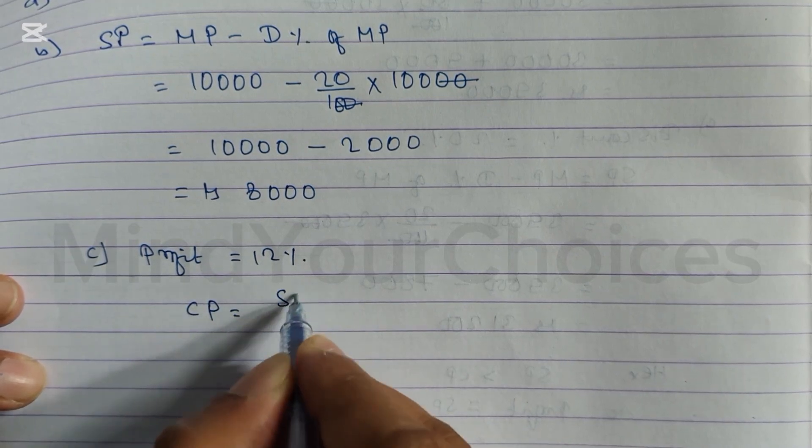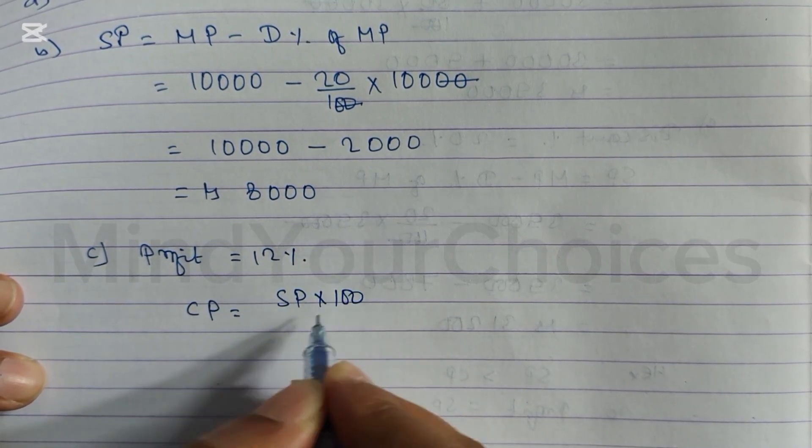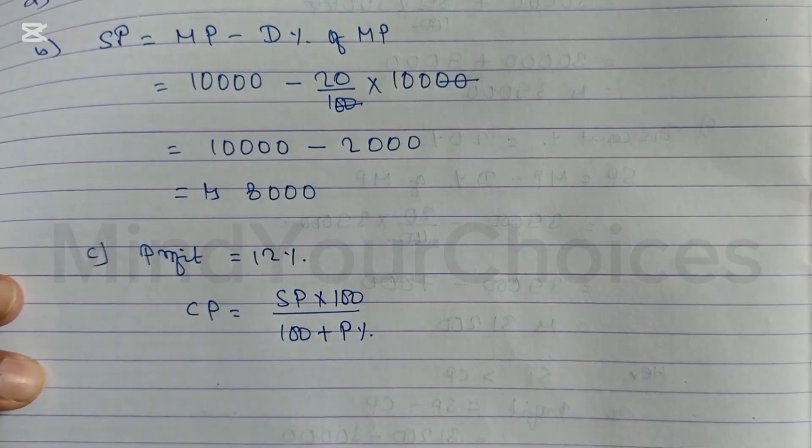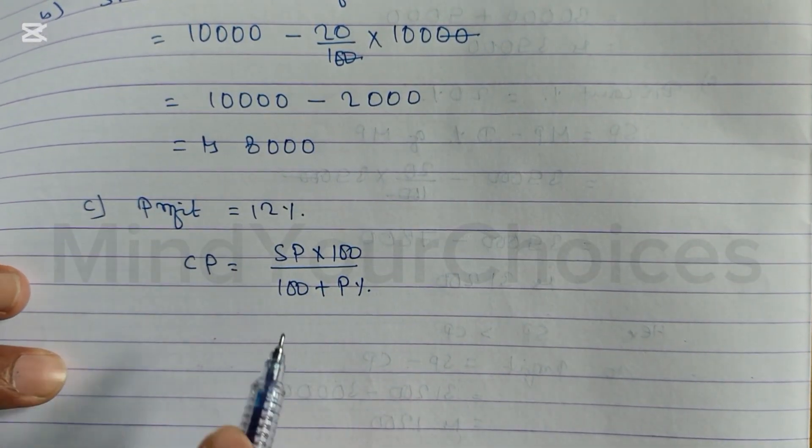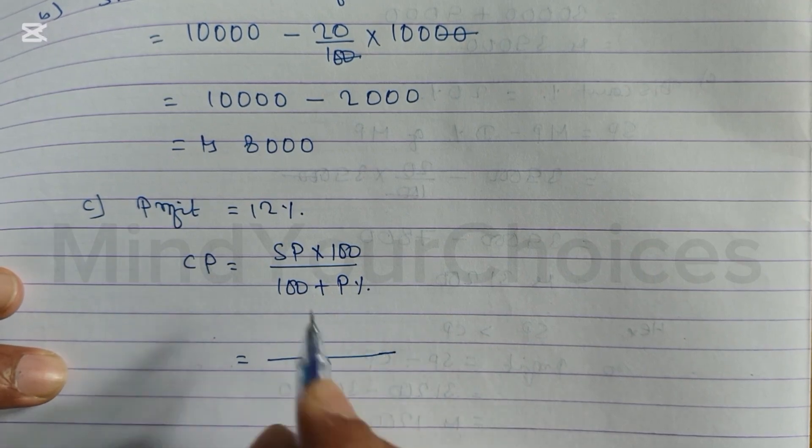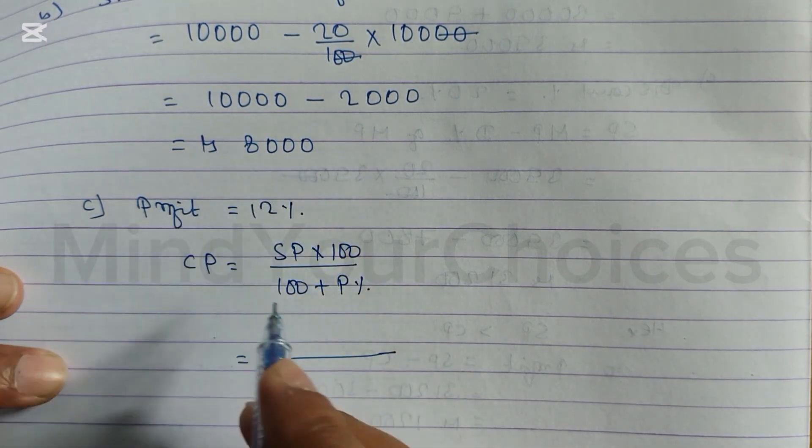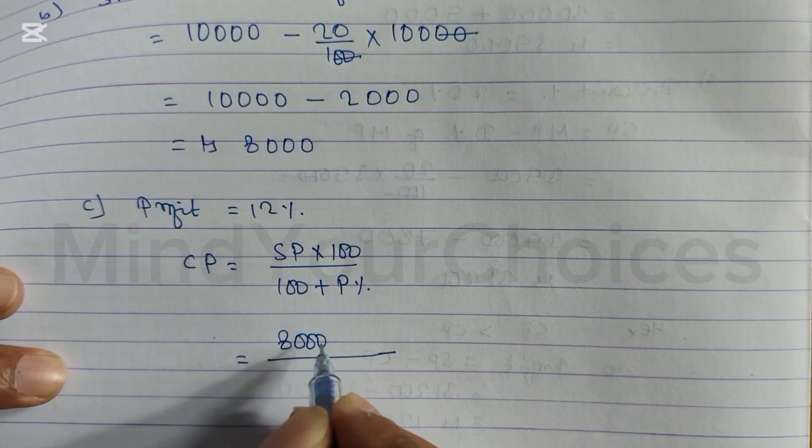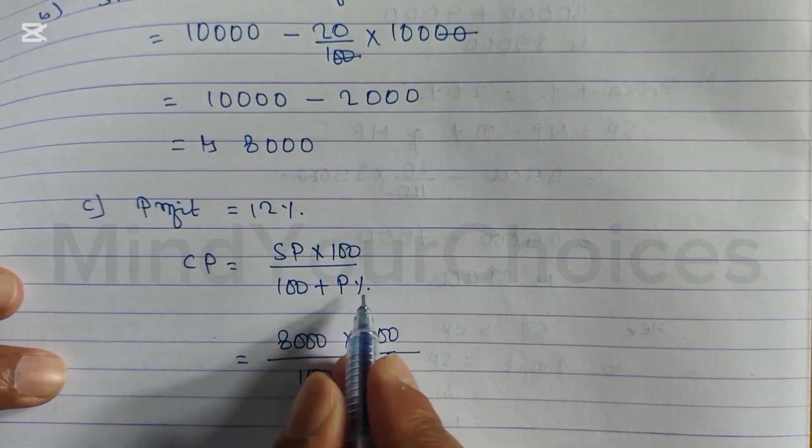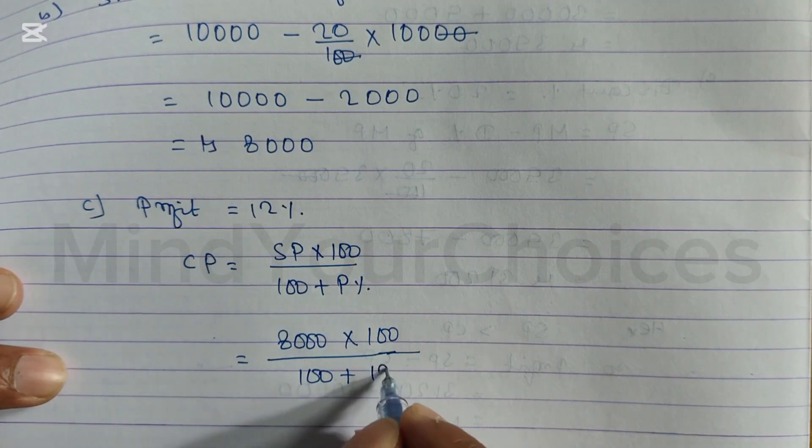We use the cost price formula. CP formula is SP into 100 divided by 100 plus profit percent. That's the formula for finding cost price. Selling price SP is 8,000, so we write 8,000 into 100 divided by 100 plus profit percent. Profit percent is 12%.